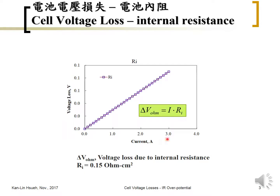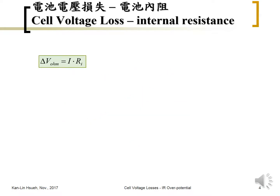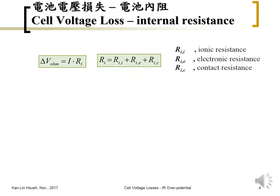The internal resistance loss — the cell voltage loss or ohmic loss — is equal to the current times the internal resistance. The ohmic cell voltage loss equals I times Ri, where I is the output current and Ri is the internal resistance. The internal resistance can be further divided into three portions: ionic resistance, electronic resistance, and contact resistance.